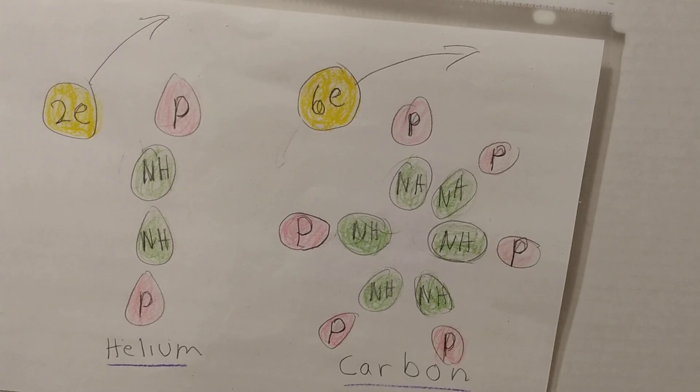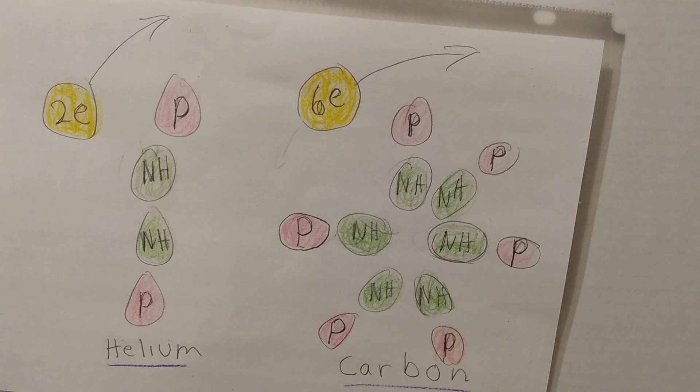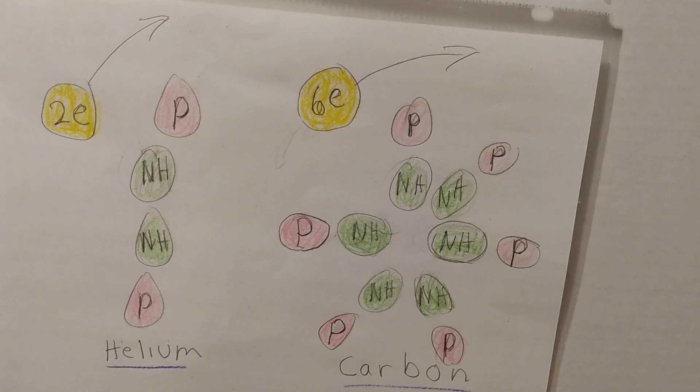Beta decay is where a neutron transforms into a proton, electron, and antineutrino. Electron capture is when an electron pulled into a nucleus combines with a proton to make a neutron plus a neutrino.